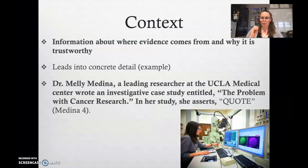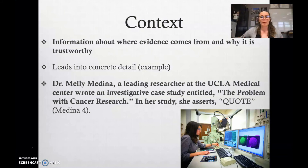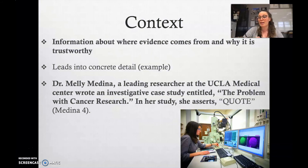Context is really important in the writing. Context is the information about where evidence comes from and why it is trustworthy. This information will help you lead into your concrete detail or example. For instance, the context for a cancer research quote would be: Dr. Mellie Medina, a leading researcher at the UCLA Medical Center, wrote an investigative case study entitled 'The Problem with Cancer Research.' In her study, she asserts — all of that is context leading up to the quote. By the time you get to the quote, you know it's from a leading researcher at a credible institution.